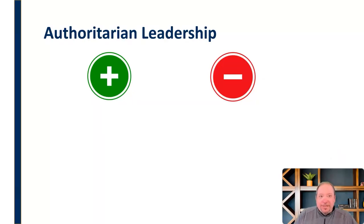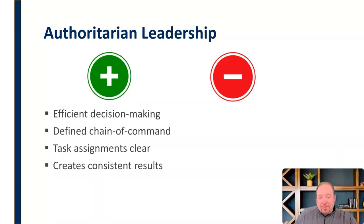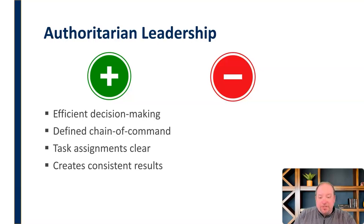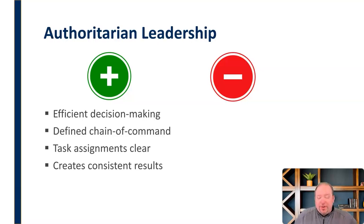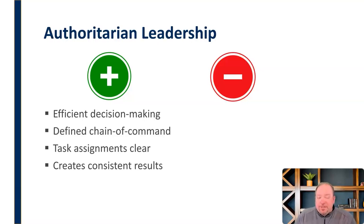Some positives for authoritarian leadership: it's efficient in decision-making because you have one person making the decision — very top-down, very efficient. It's a very defined chain of command; there's no question about who reports to whom or who's in charge. Task assignments are very clear. And it also creates very consistent results over time because you have the same people doing the same things, giving you that repetition and efficiency.